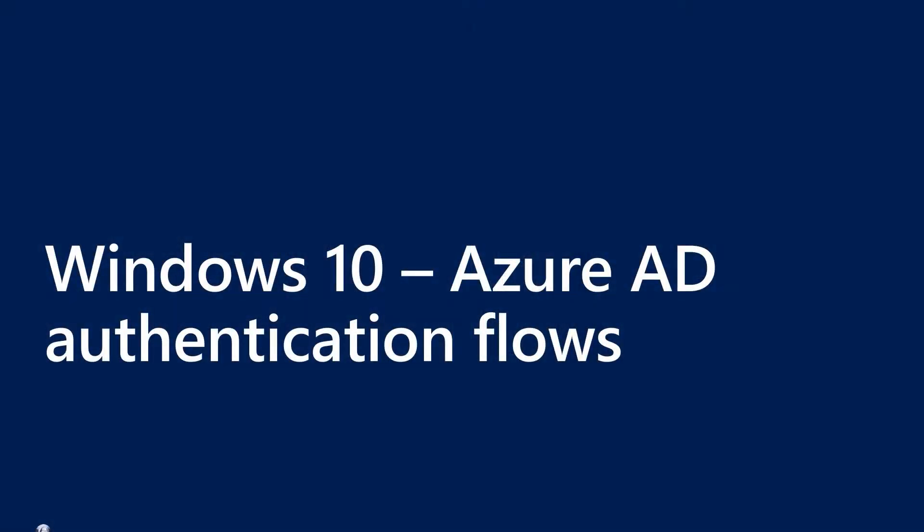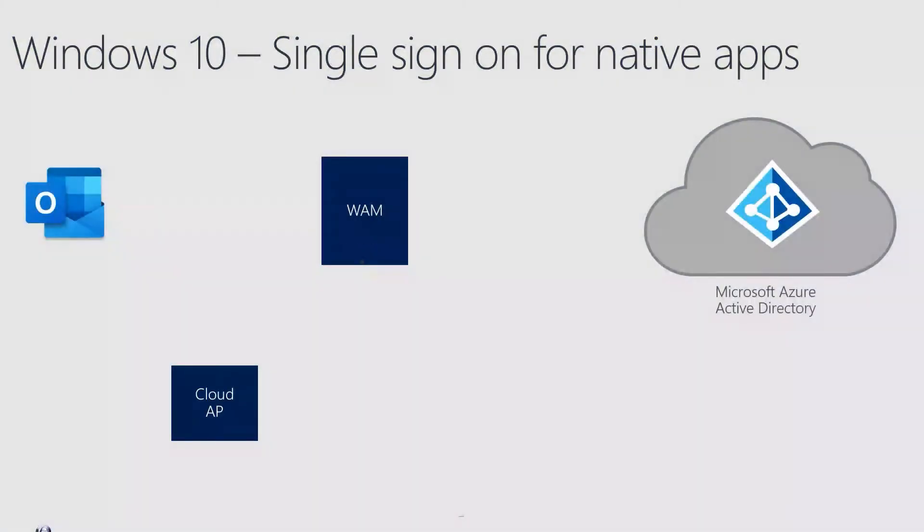Happy to. First, let's take a look at how it works in native applications. For this, we'll take a familiar example of your Outlook client trying to get your email from Exchange Online. This flow starts with Outlook requesting a token from the Web Account Manager, or WAM for short, a component on Windows that enables single sign-on. WAM is what we call a token broker that enables applications to get tokens using a common API.